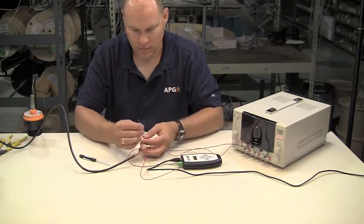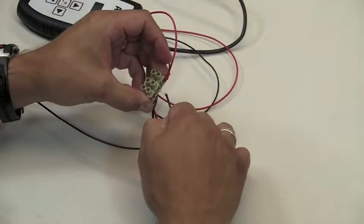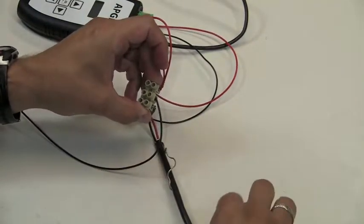Next take the negative, or black wire from the power supply, and put it into the middle right terminal on the terminal block, and tighten the screw.